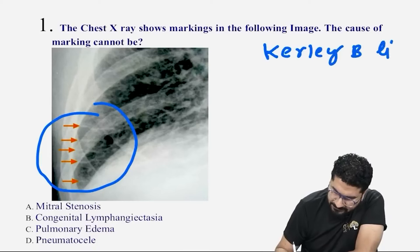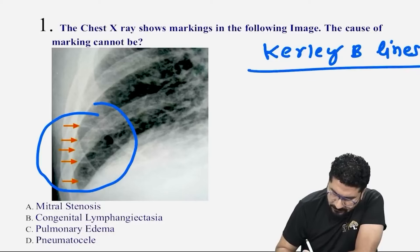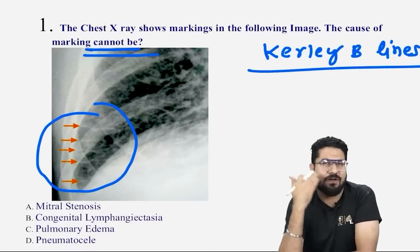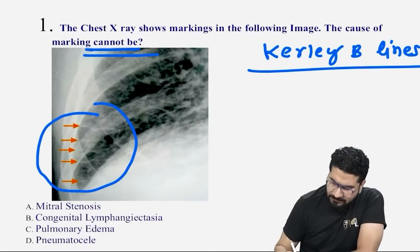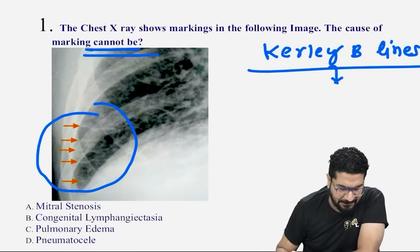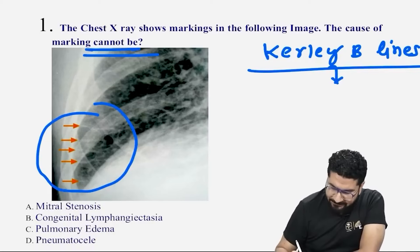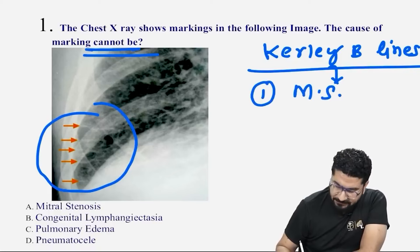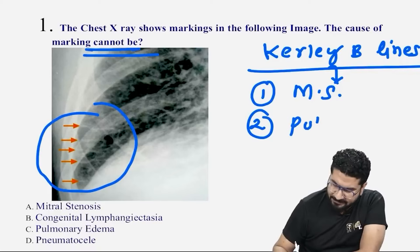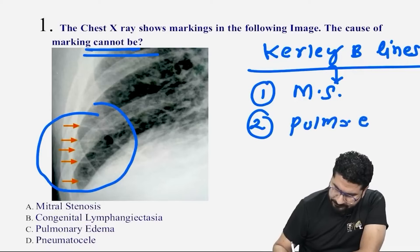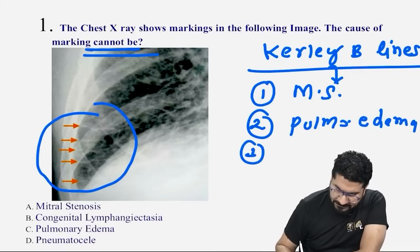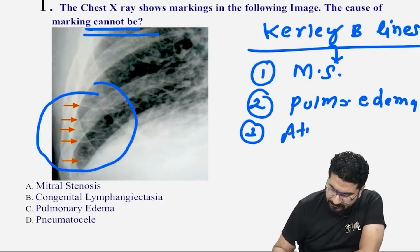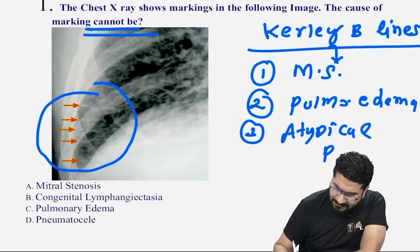The question asks what cannot be a cause of Kerley B lines — all are causes except one. We see Kerley B lines in conditions like mitral stenosis, pulmonary edema, and atypical pneumonia, which includes viral or mycoplasma pneumonia.